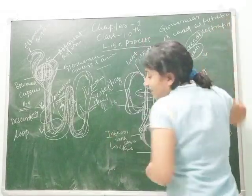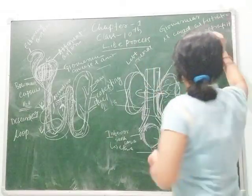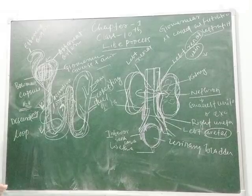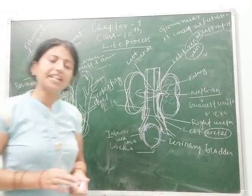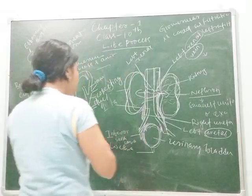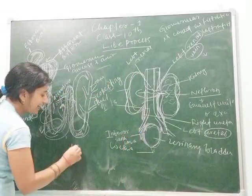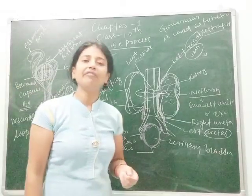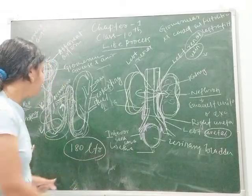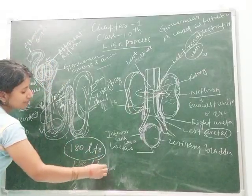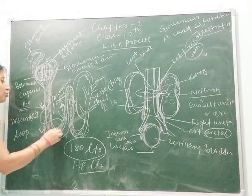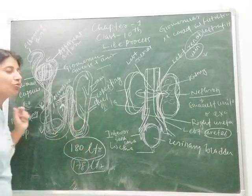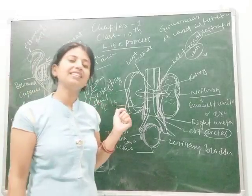Glomerular filtration is called ultrafiltration because proteins are not filtered at this stage. Interestingly, after initial filtration, 180 liters of filtrate are formed in our body per day, but we release only 1 to 2 liters of urine. The remaining approximately 178 liters get reabsorbed during movement through the tubules.